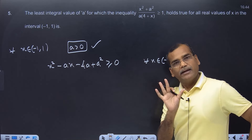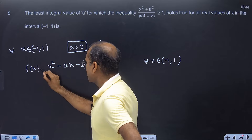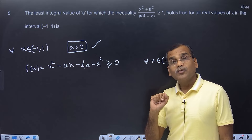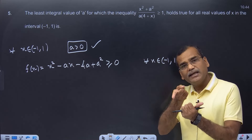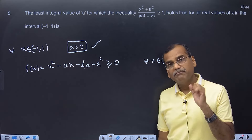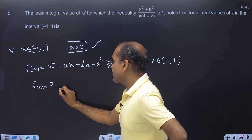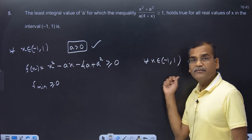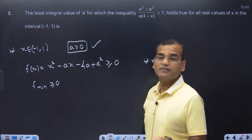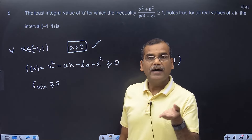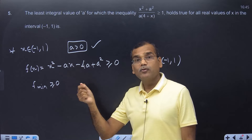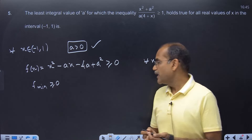I am going to denote this expression as f(x). If I call this f(x), think about it — you want the function to be always greater than or equal to 0 in the interval. So if I make the least value of f in this interval greater than or equal to 0, i.e., if f_min ≥ 0, then in the entire interval your inequality will be true. Common sense: when the smallest value is greater than 0, every value of x will be greater than 0.